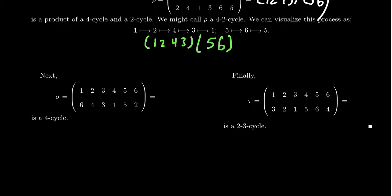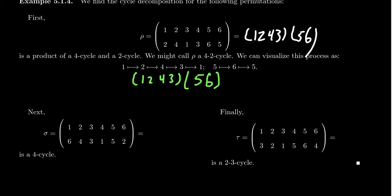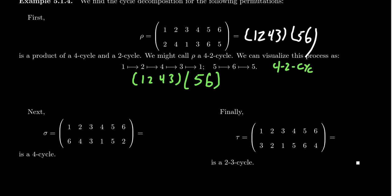Let's look at some other examples here. Before I leave rho here, since this is a permutation with two different cycles, we might refer to this as a 4,2-cycle, meaning that we have a 4-cycle and a 2-cycle together that are disjoint from one another.